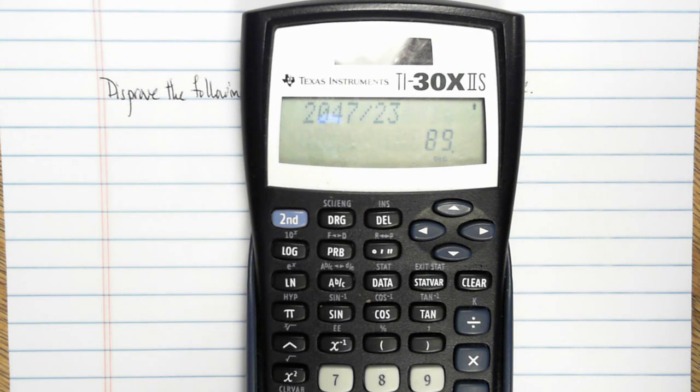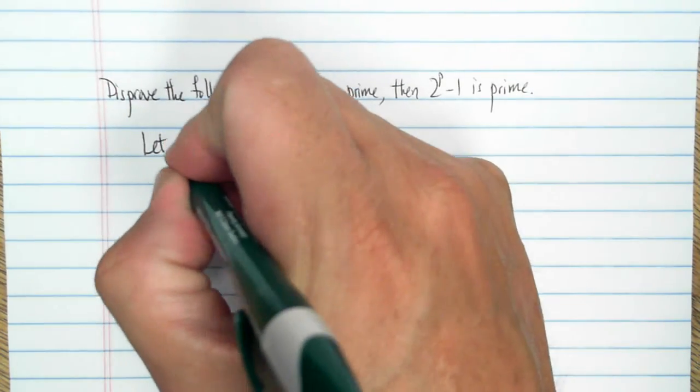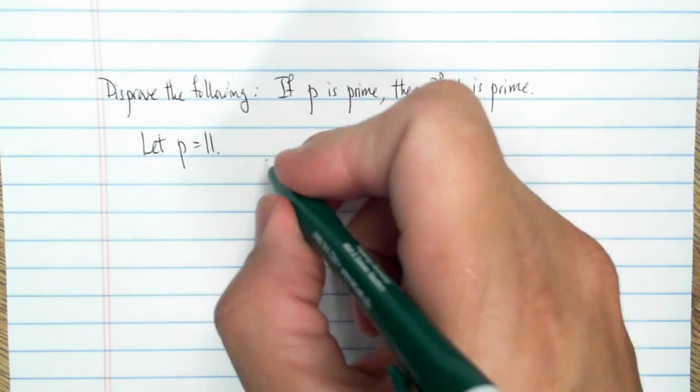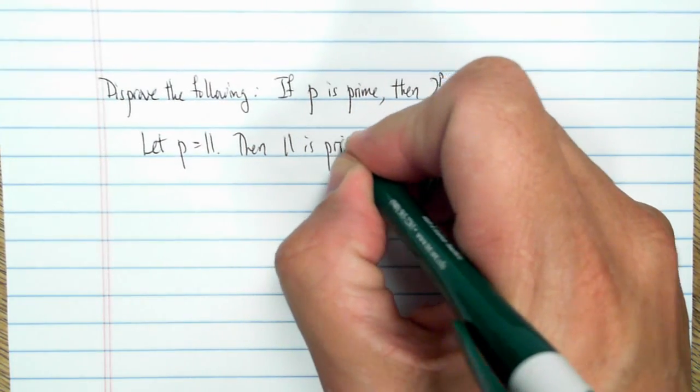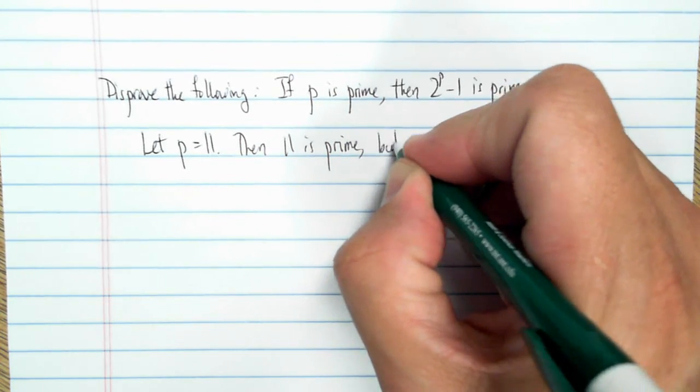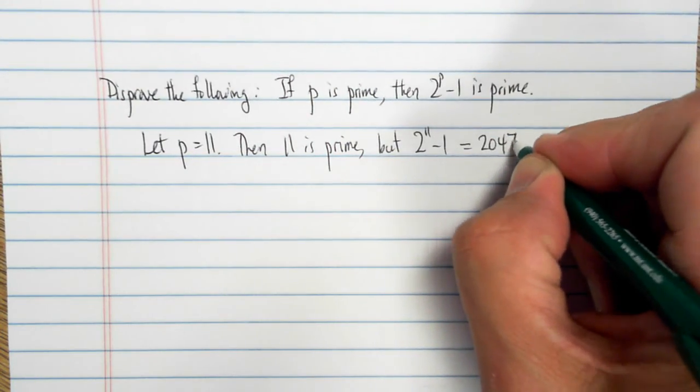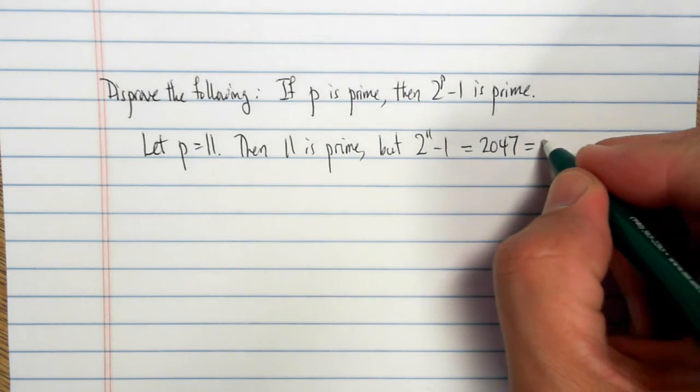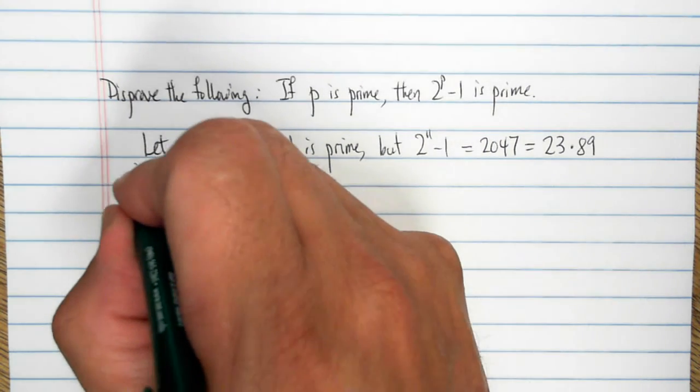So it took a while to find a counterexample. And I do this work on the calculator because the next one I'm about to write is deceptively short. This is false. Let P be equal to 11. Then 11 is prime. But 2 to the 11th minus 1, which is 2047, which I just got done showing is equal to 23 times 89, is composite.